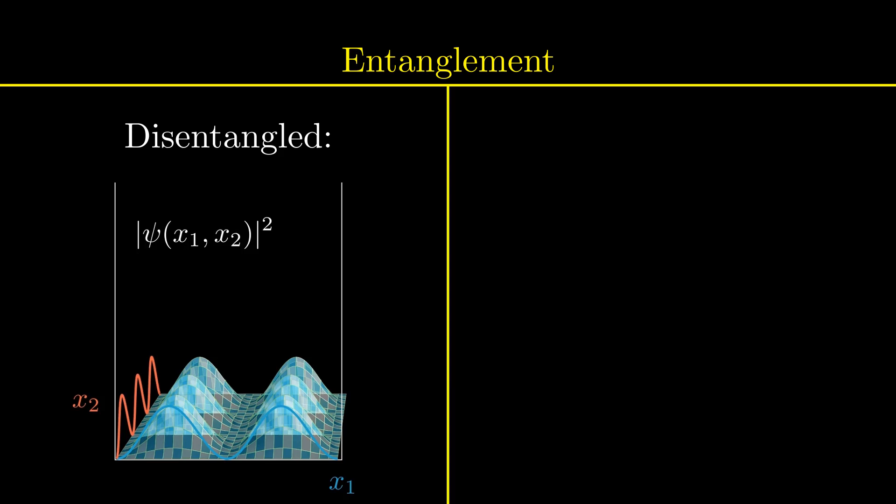These states are disentangled since a measurement of the position of either particle is independent of our knowledge about the position of the other particle, visually observed as a symmetry in the translation along the position coordinates.